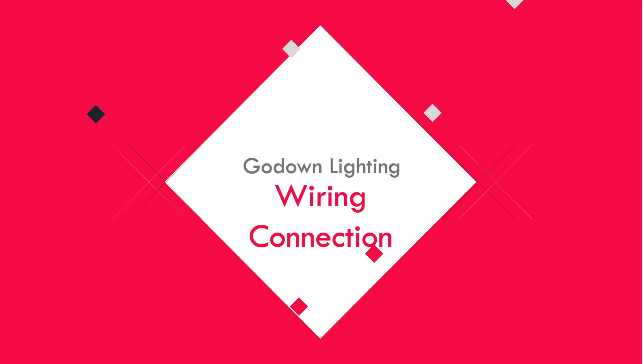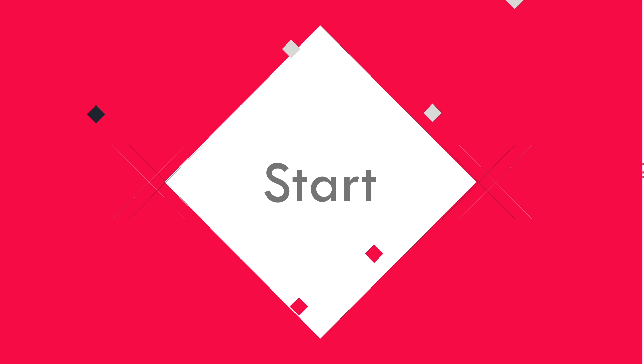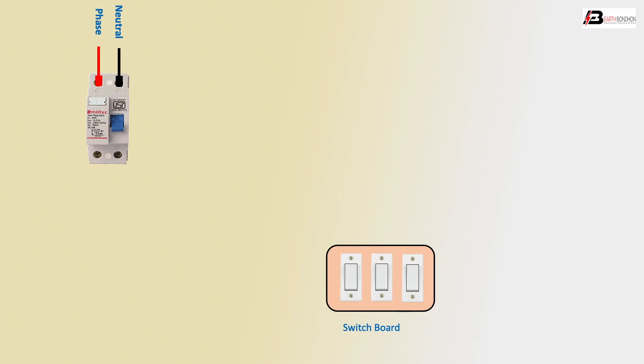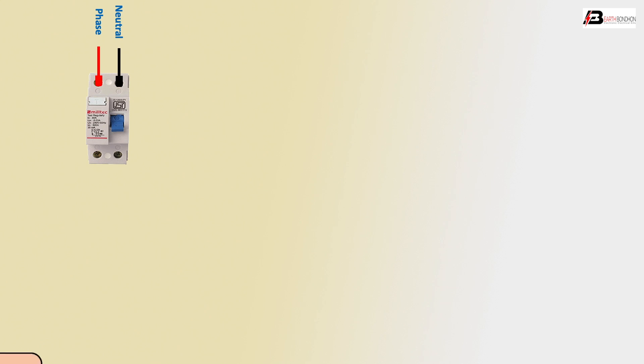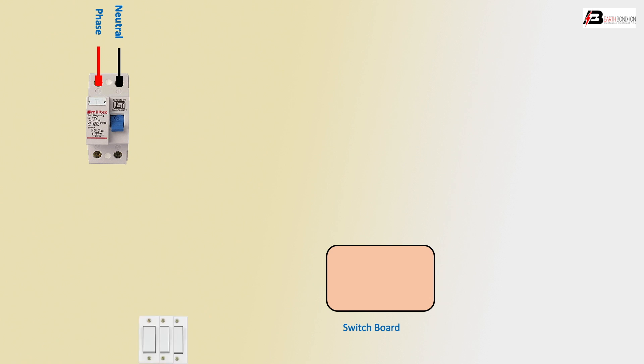Hello viewers, today I discuss the go-down lighting connection. Let's start with the DP MCB — the Double Pole Circuit Breaker. We have phase input and neutral input, and the SB means switchboard with three switches.